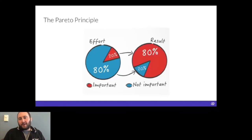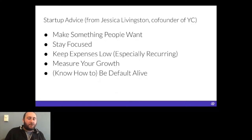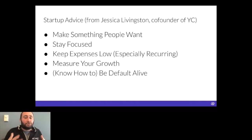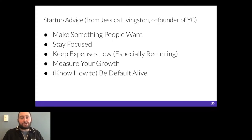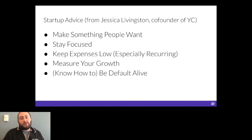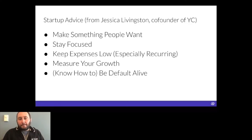I graduated from Y Combinator and want to share some standard YC lessons that relate closely to the Pareto principle. One is: make something people want — focus your efforts on learning and understanding what people want. Stay focused — deploy your team on those 80/20 features. Keep expenses low — effectively 80/20 your cash. Measure growth, and know how to be default alive, which is a Y Combinator term from Paul Graham.